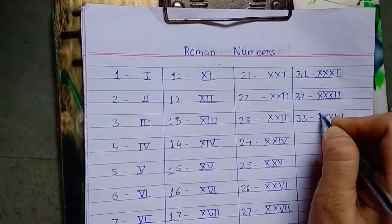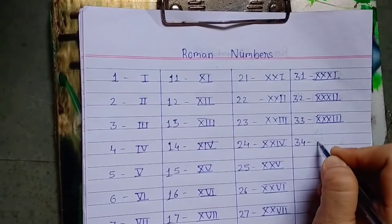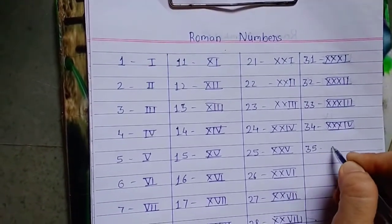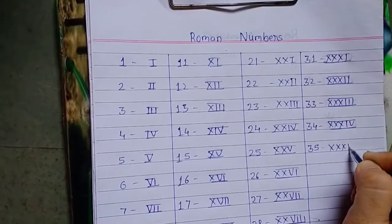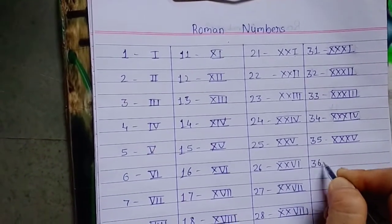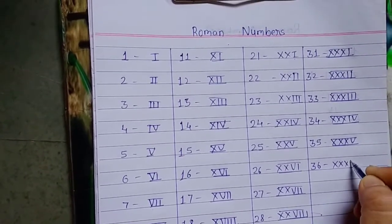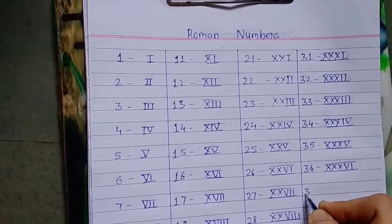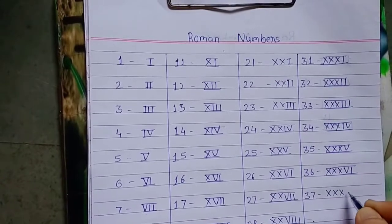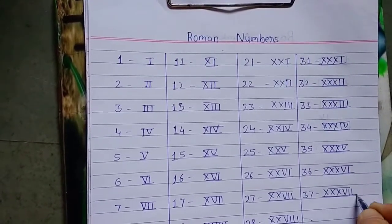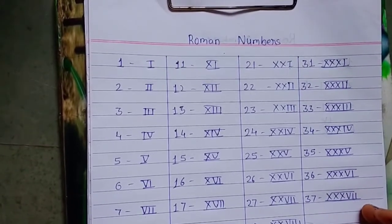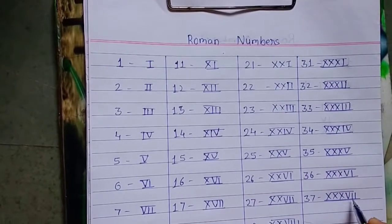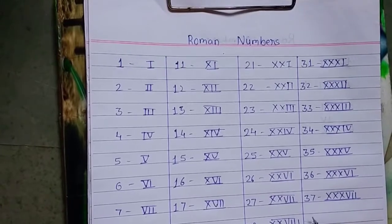34, 35, 36. 30 तक हम ऐसे लिखेंगे और 1, 2, 3 में जैसे हम लिख रहे थे वैसे उसके साथ जोड़ते जाएंगे। 30 and 7. अगर हमें एकदम से 37 Roman numbers में दिया जाए और हमें English या Hindi में पूछा जाए, तो हम इसको कैसे पढ़ पाएंगे: 10, 20, 30 plus 5 plus 2 — 37 हम इस तरीके से भी पढ़ पाएंगे।